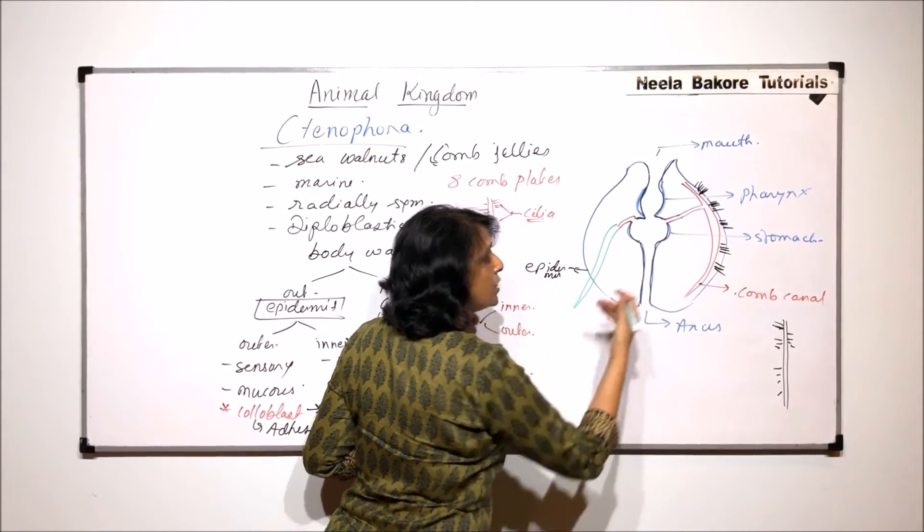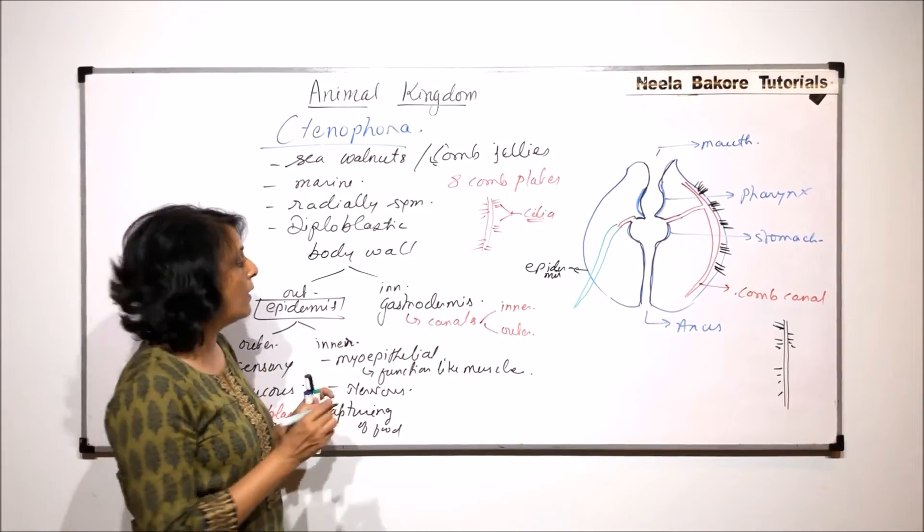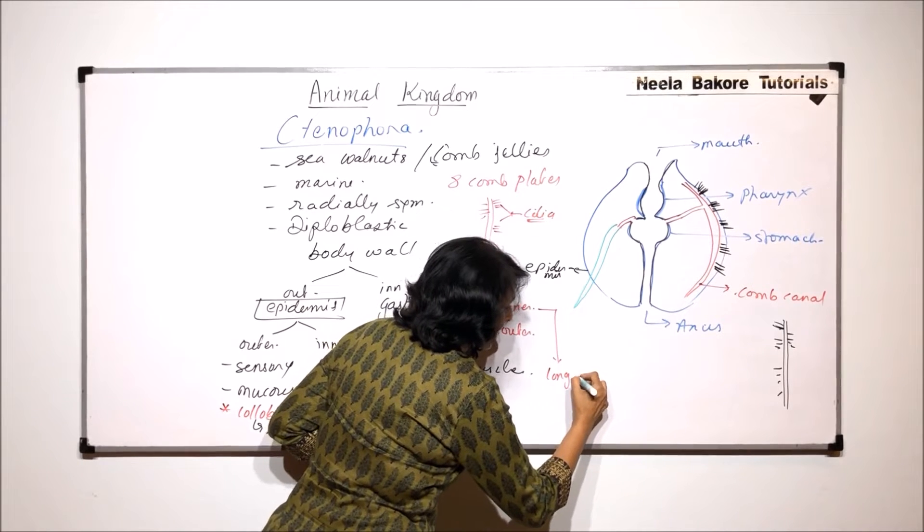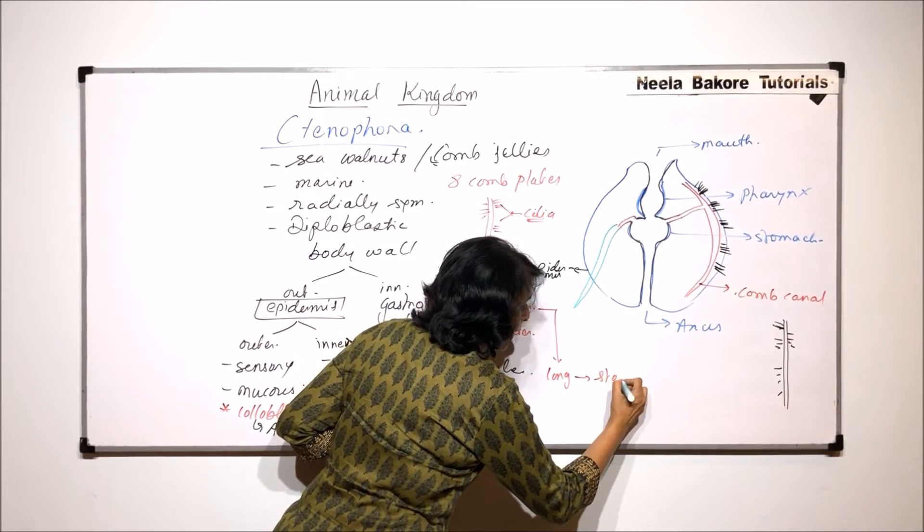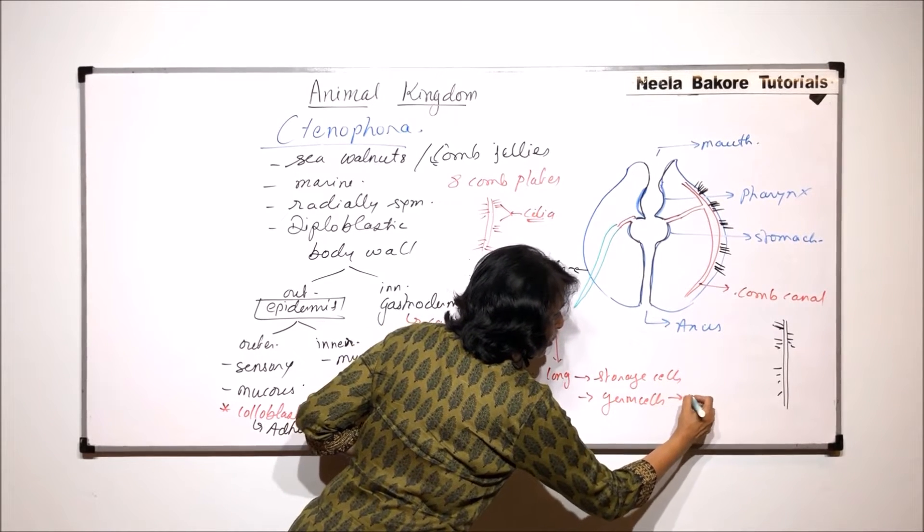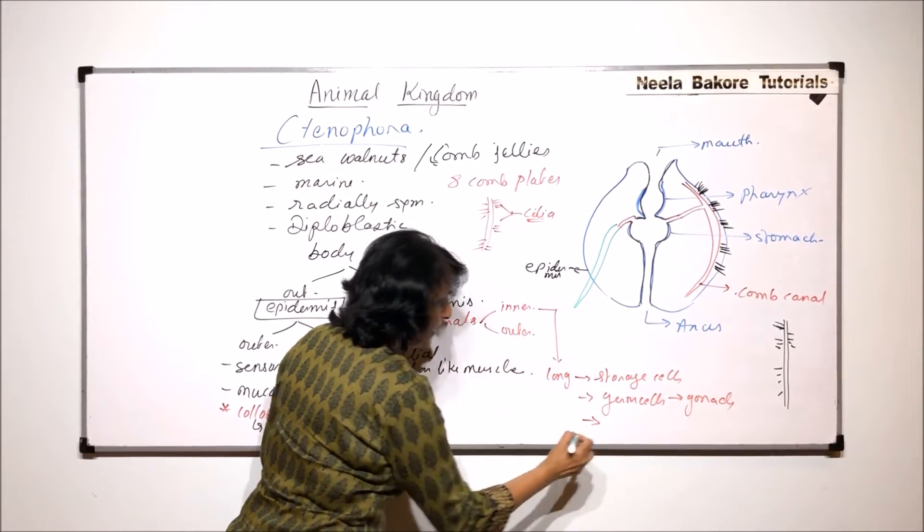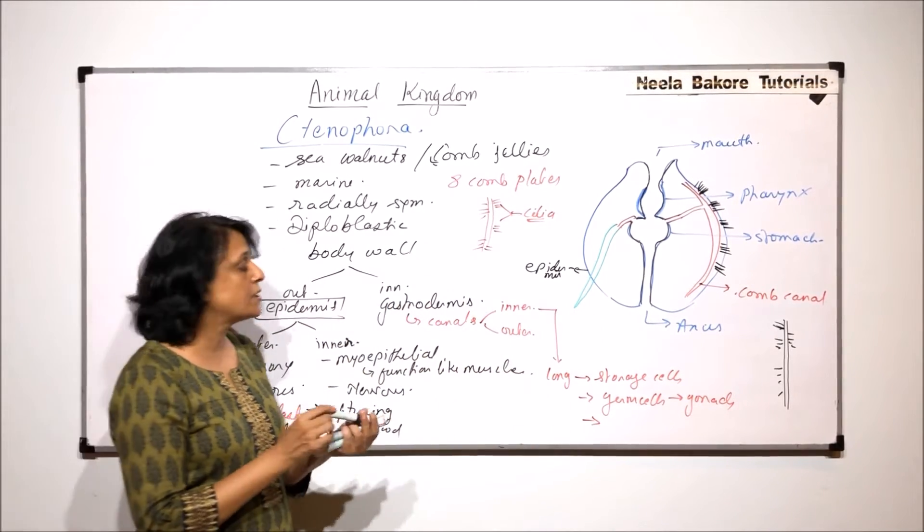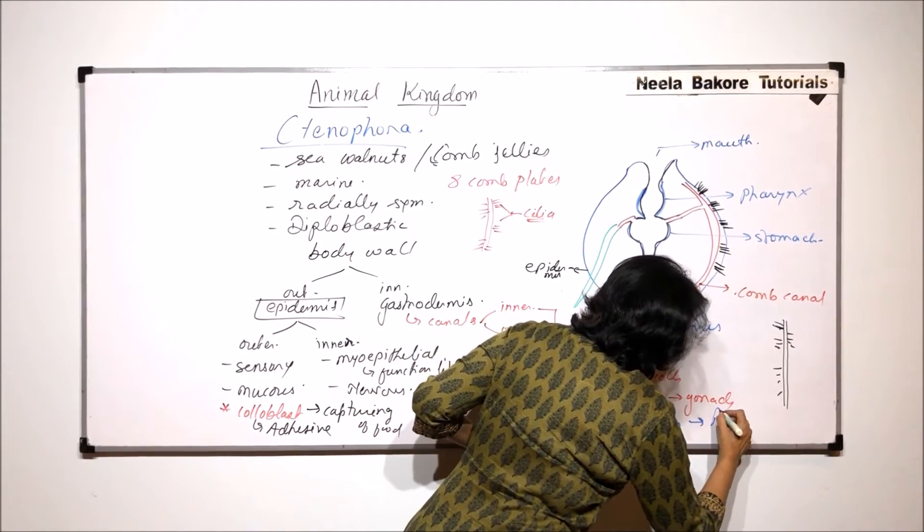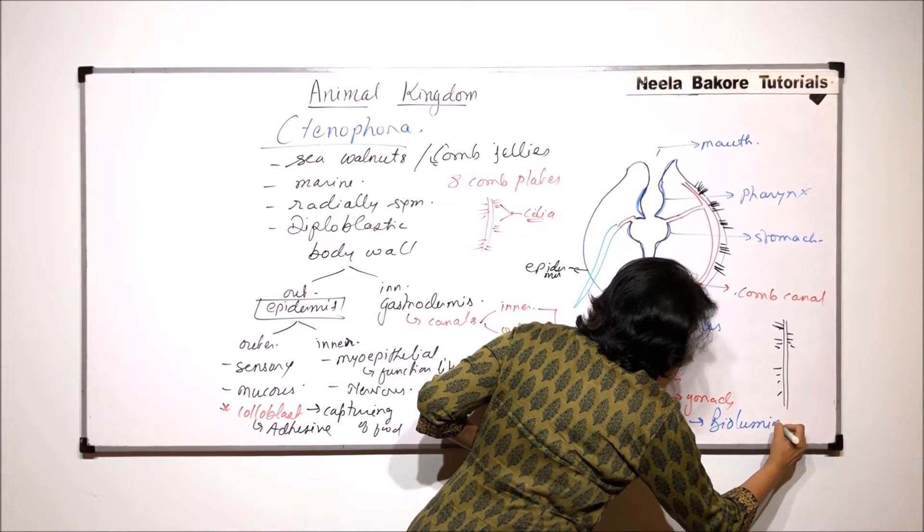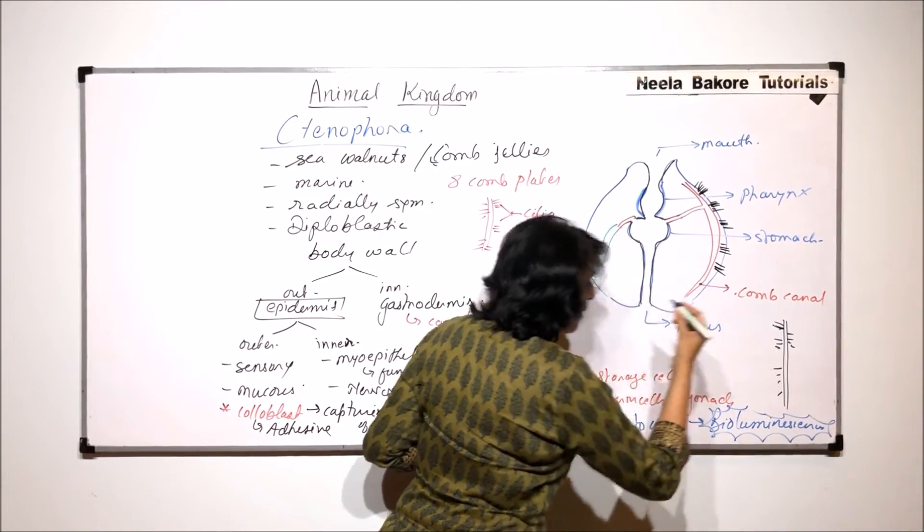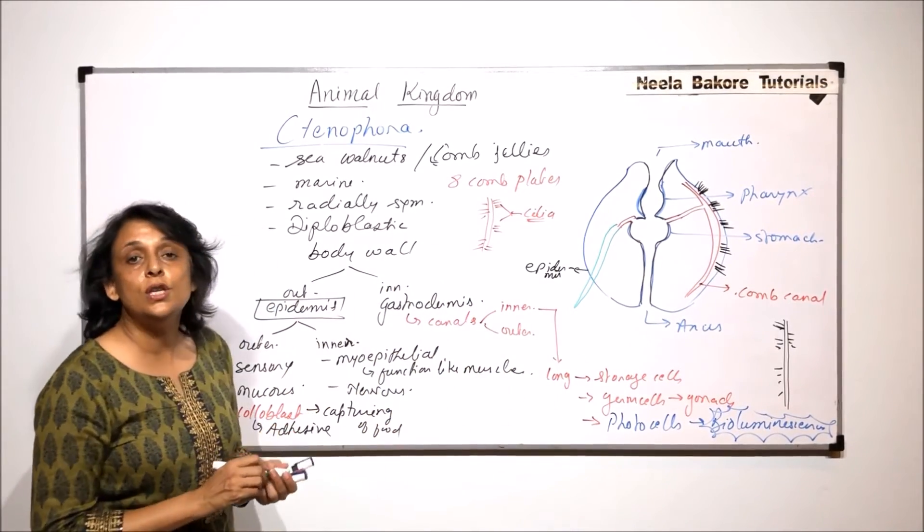The inner cells are long. They can act as storage cells. They can act as germ cells, that means they would produce gonads. And there are some special cells which are called the photocytes. And because of this they show bioluminescence. This is again a characteristic feature of the members which belong to Ctenophora.